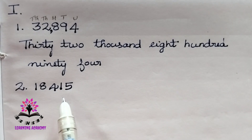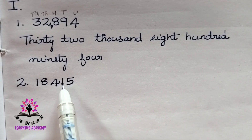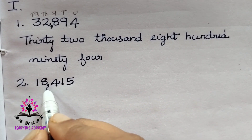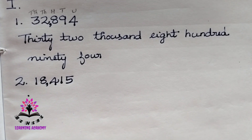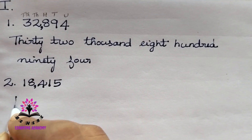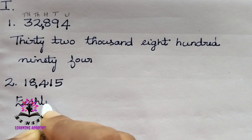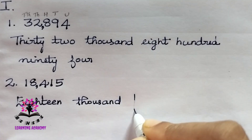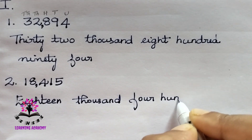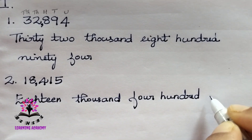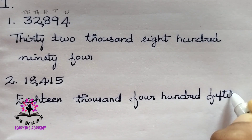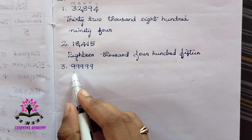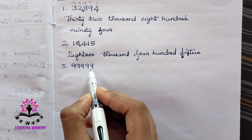Let us move on to the next question. Here also you have to put the comma. This is the unit place, tens place, hundreds place — the comma comes here. So this will be 18,415: eighteen thousand four hundred and fifteen.